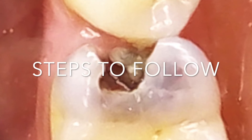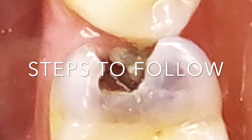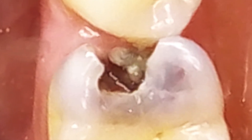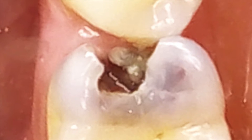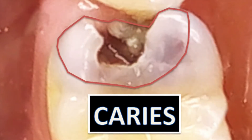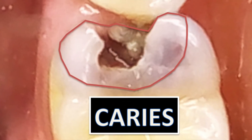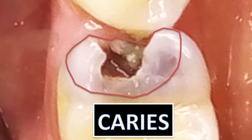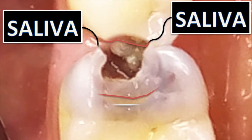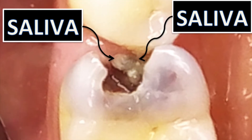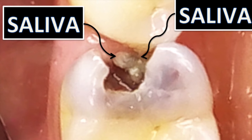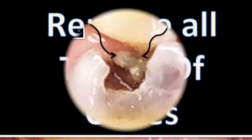In our hurry to gain access into the pulp chamber, we tend to overlook two things of vital importance: one, the caries that was responsible for the pulp getting affected, and two, the ingress of saliva through the open proximal cavity.